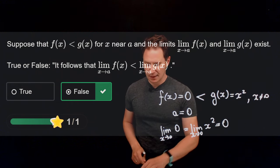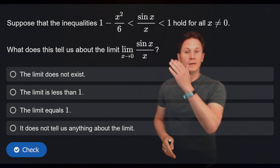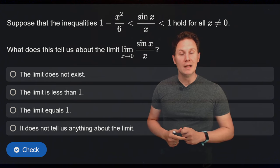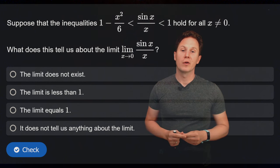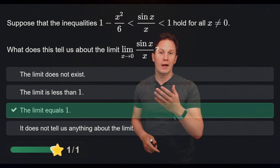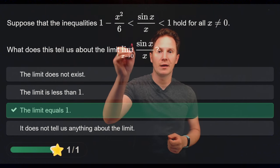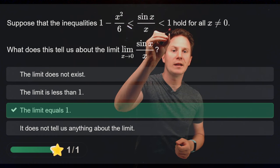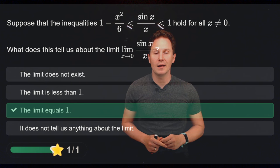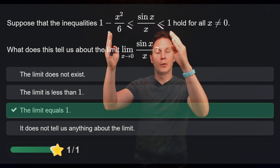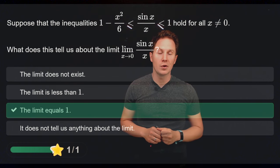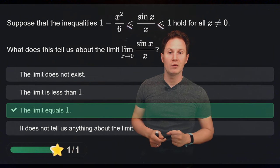Suppose we know that certain inequalities hold true for all x not equal to 0. What does this tell us about the limit as x approaches 0 of sine of x over x? This is a perfect example for the squeeze theorem. We relax the strict inequalities to less-than-or-equal-to without breaking them, and then compute the limits of the lower and upper bounds as x approaches 0 — we get 1 for both by direct substitution. Hence, by the squeeze theorem, the limit of sine(x) over x as x approaches 0 must also equal 1.